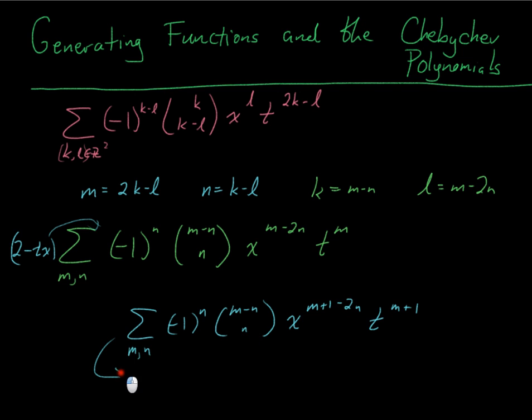So this is equal to, if I just shift m down by 1—so sum over m and n, (-1) to the n, I'm shifting m down by 1, so I get (m minus 1 minus n) choose n again. And then x, since I shifted back down, now it's just x to the (m minus 2n), t to the m.